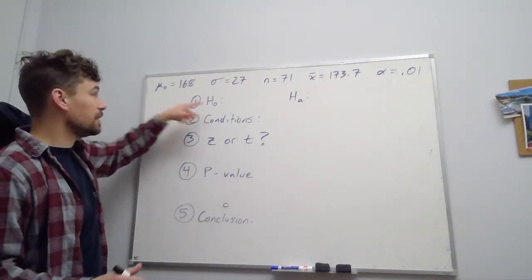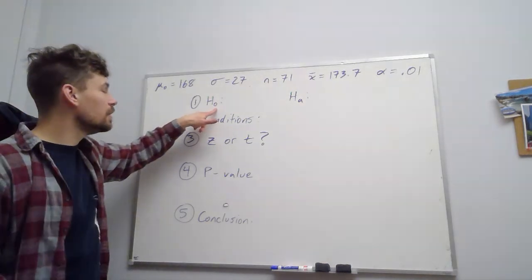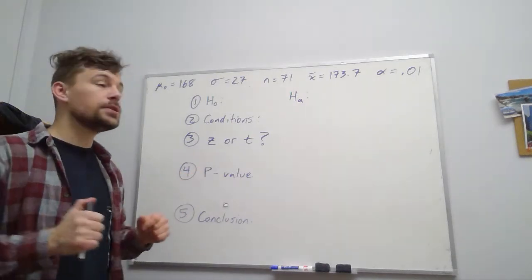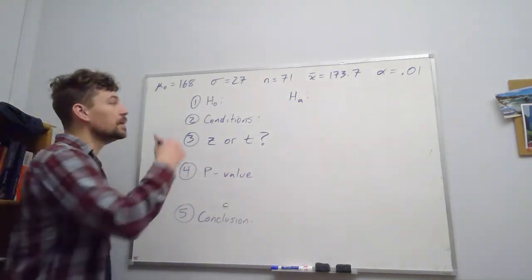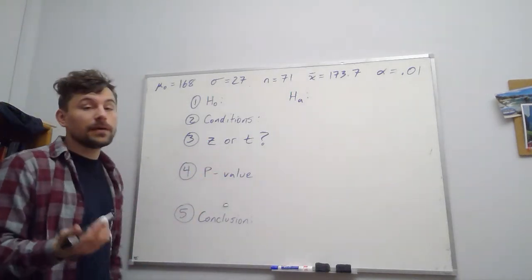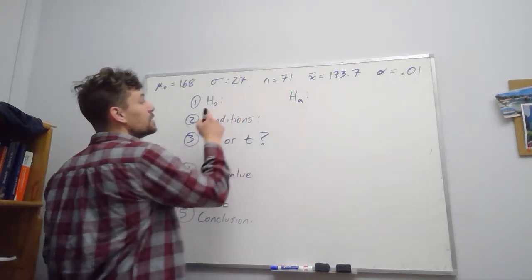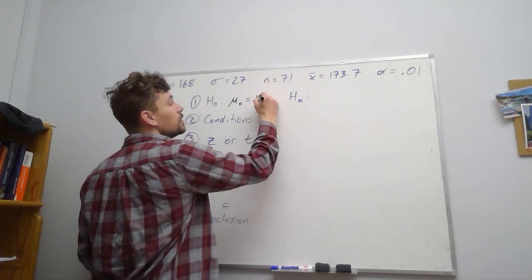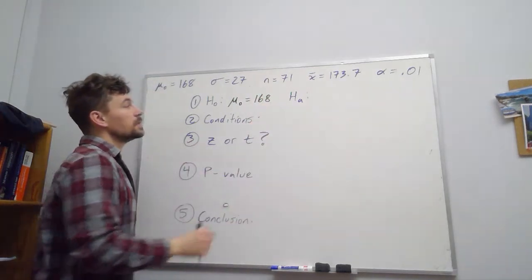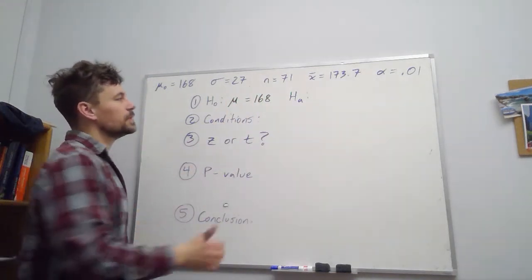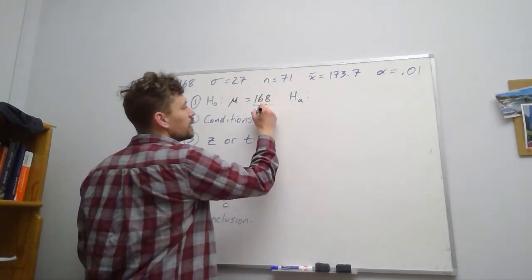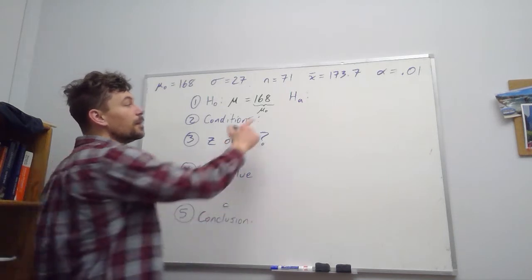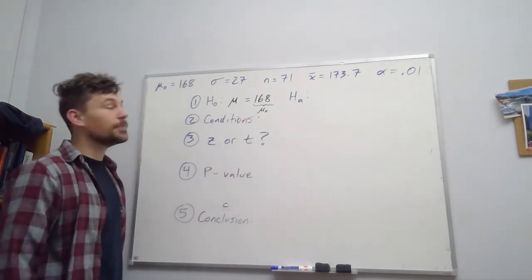So the good news is that we actually already have our null hypothesis. Remember the null says this is something that we're referencing either for the broader population, perhaps a previous value, something that we have some evidence to believe is the real value. So our null hypothesis is that μ equals 168, that μ has not changed from this value of the general population, right?